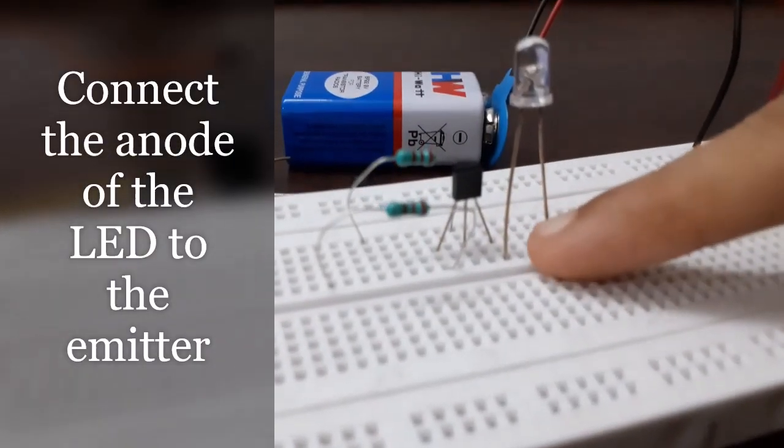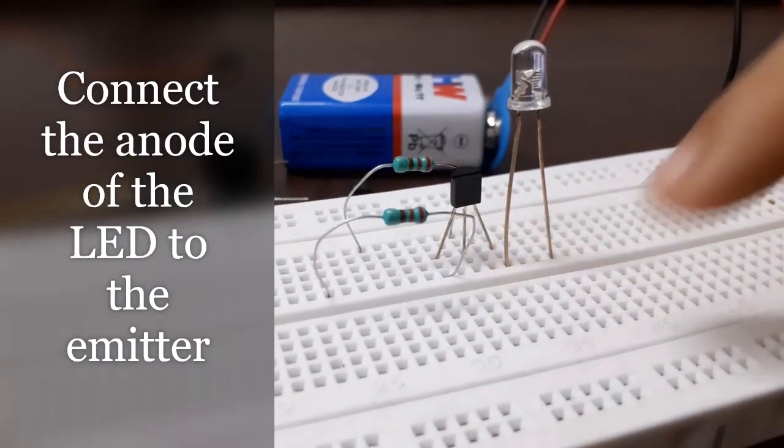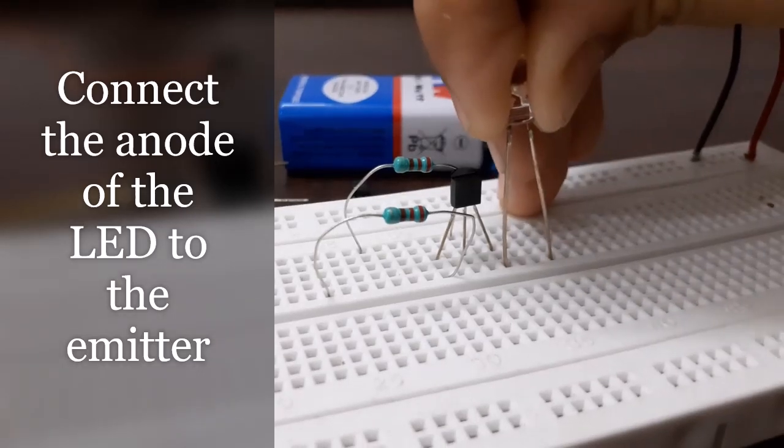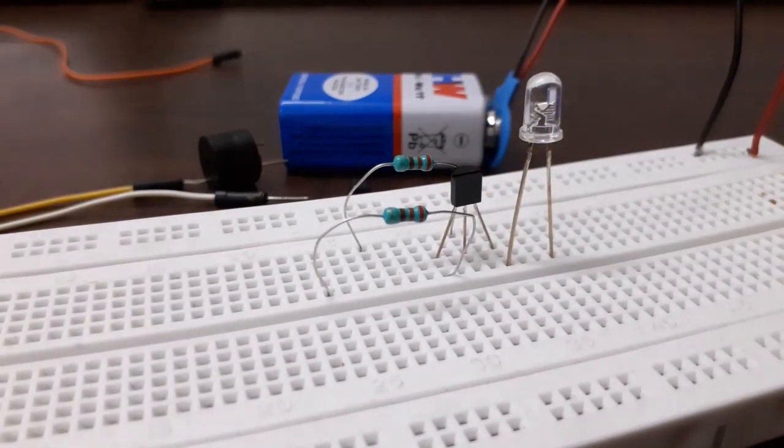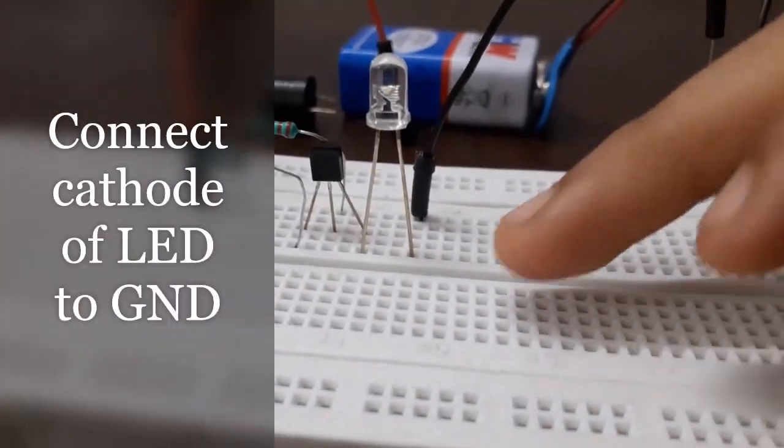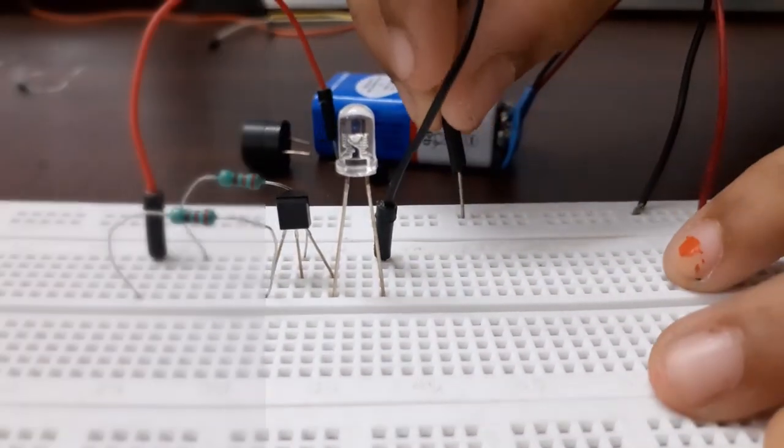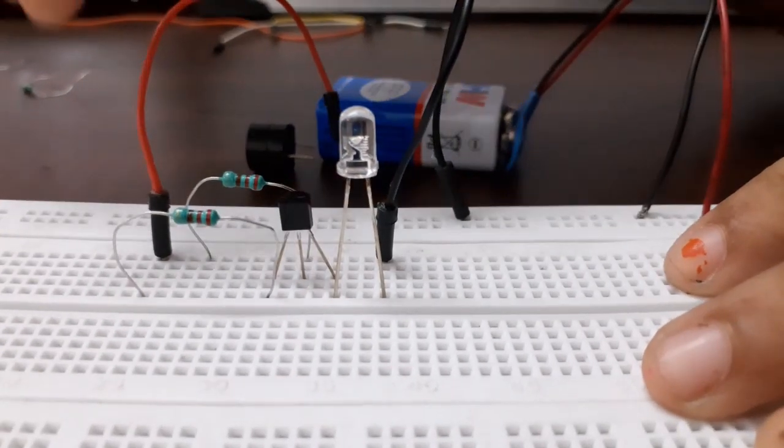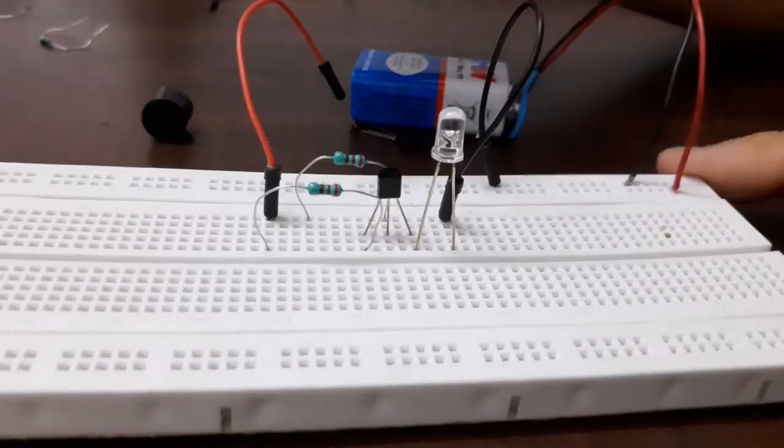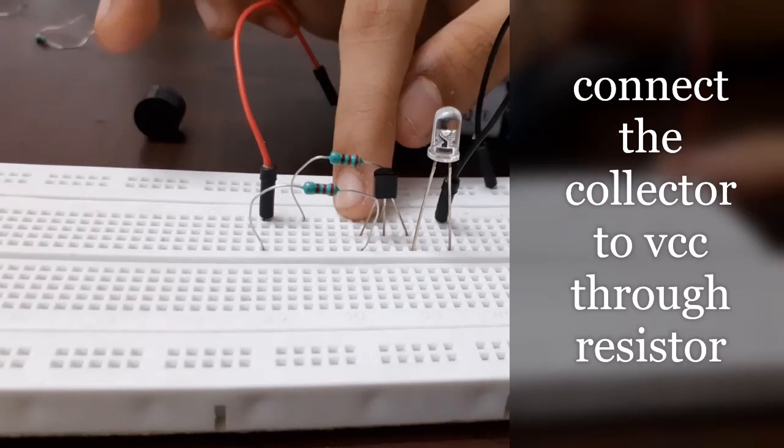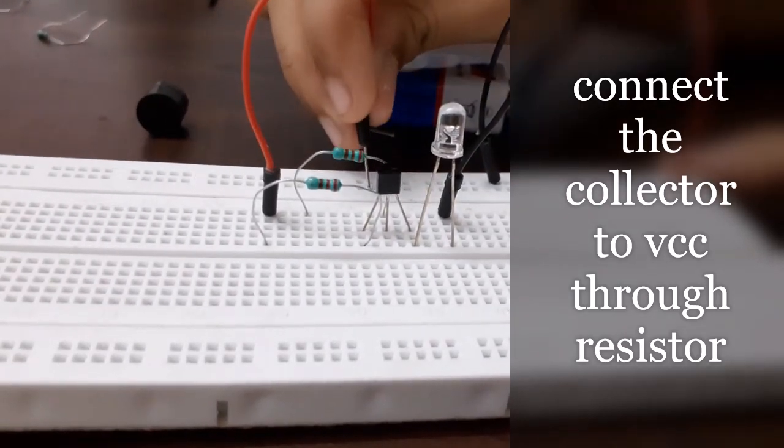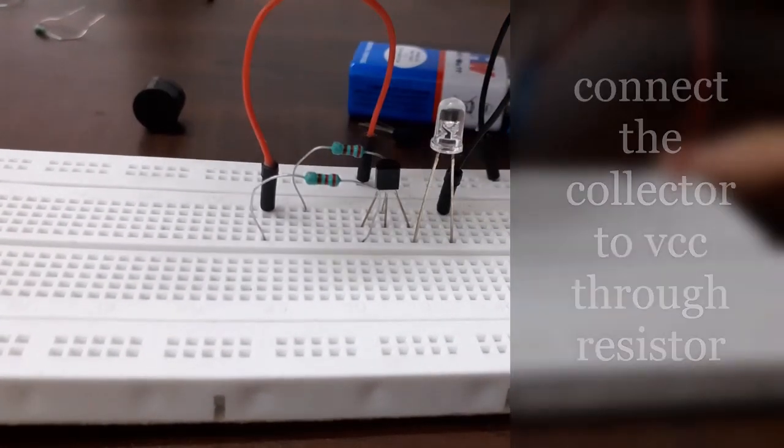And connect the anode of the LED to the emitter node. Now connect the cathode of the LED to the ground. Now connect the collector to VCC through R1.